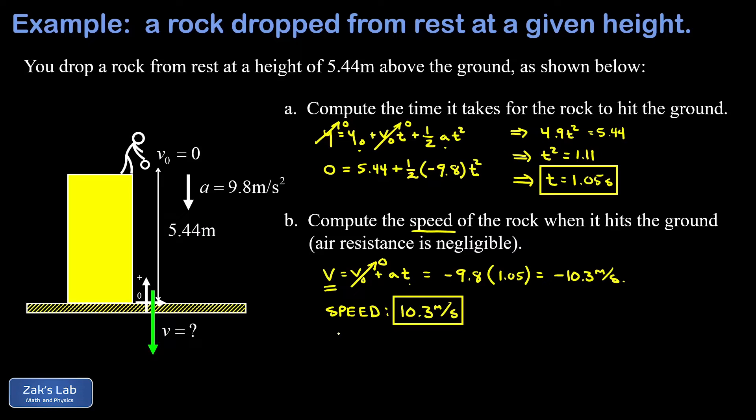Now before we quit, I want to bring up one way that we could check our work in this problem. And that's by using our third standard formula for constant acceleration kinematics. This is the one that's time independent. And that's v squared equals v-naught squared plus 2a times the displacement. So y minus y-naught.